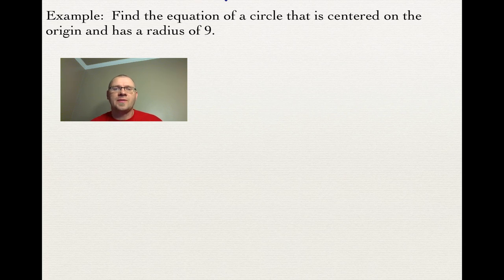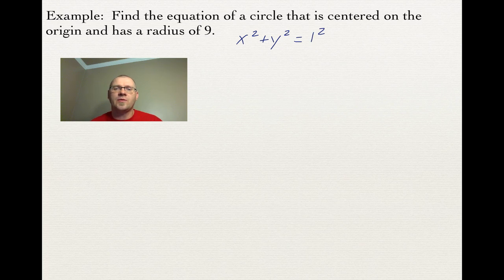First example: find the equation of a circle that is centered on the origin and has a radius of 9. We know the unit circle used the Pythagorean theorem with a radius of 1. So instead of 1, we put in 9. It just happens to be 9 squared, so the equation of this circle is x squared plus y squared equals 81.